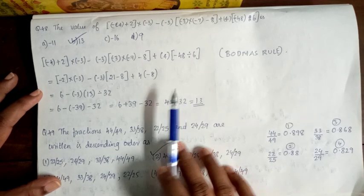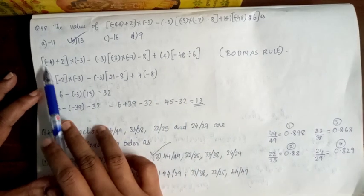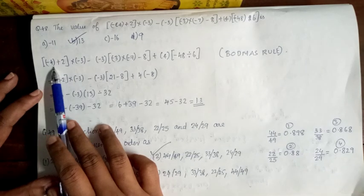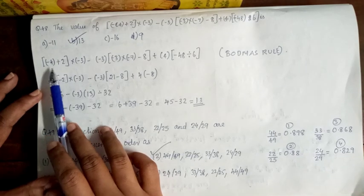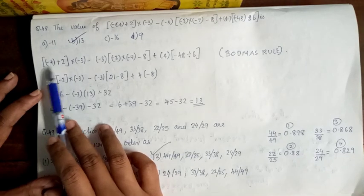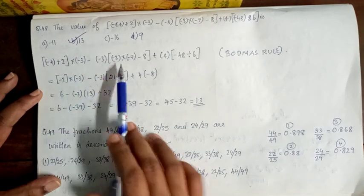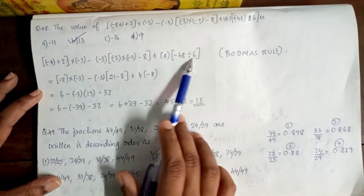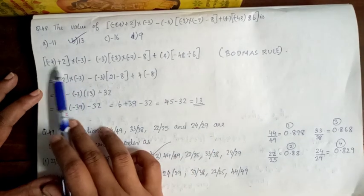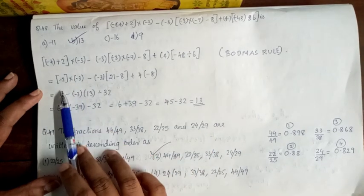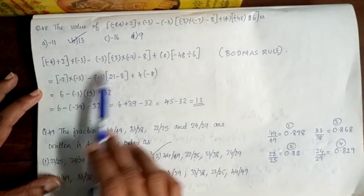First of all, I will perform all the operations inside the brackets. This gives minus 2.